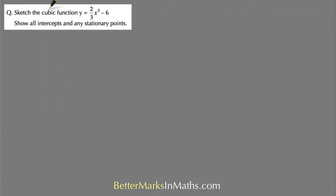In the second example, sketch the cubic function y equals two-thirds x cubed minus 6. And again this is in stationary point of inflection form. Anytime you've got x cubed as the only x term or you've got x plus or minus something in a bracket cubed, that's in stationary point of inflection form.